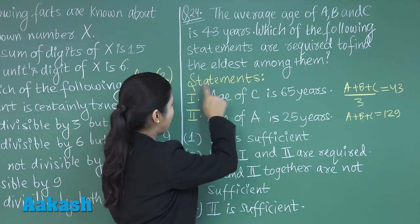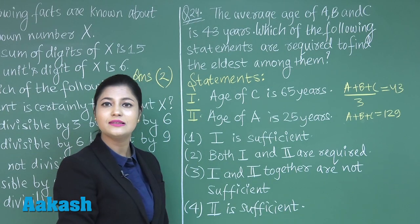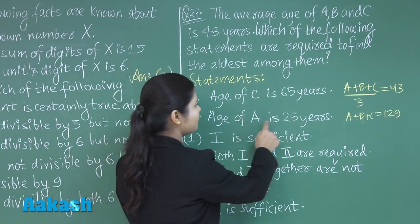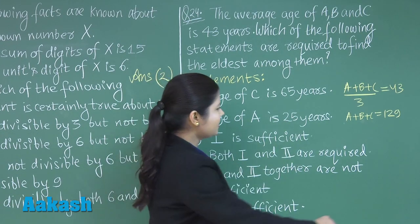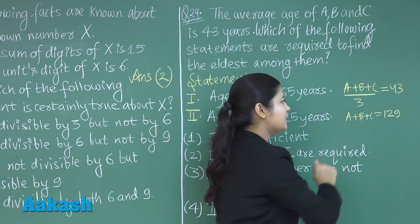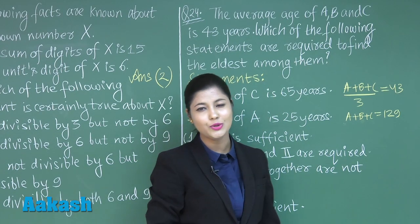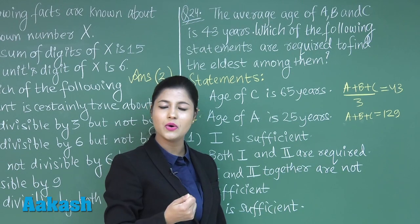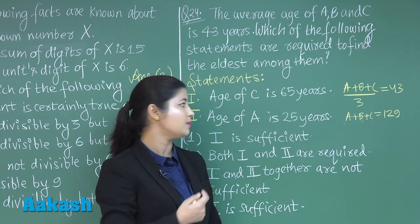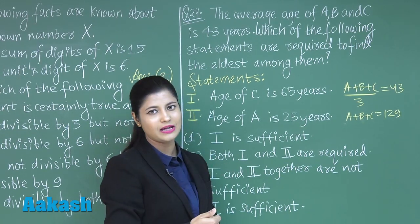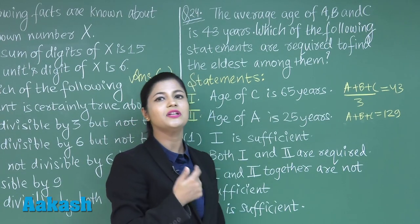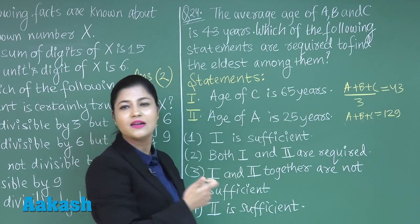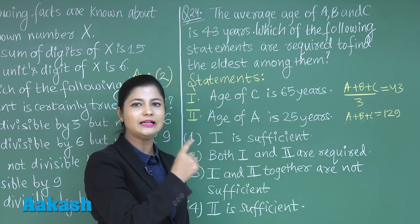Now let us check statement 2: the age of A is 25 years. If A is 25, then B plus C equals 129 minus 25, which is 104. But from this we cannot determine whether B is greater than C or C is greater than B. So statement 2 alone will not help us find the eldest. Even combining both statements, statement 1 alone is already sufficient and definitively tells us who is eldest.